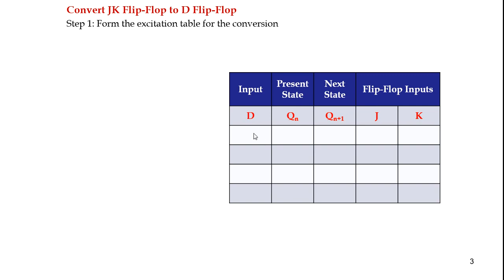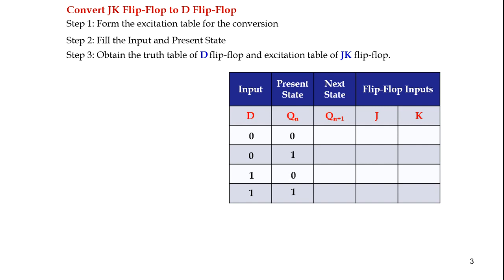For the input, D can have value 0. When D is 0, we can have two cases of present state: either 0 or 1. And when the D input is 1, the present state can also be 0 or 1. The next step is to obtain the truth table of the D flip-flop and the excitation table of the JK flip-flop.